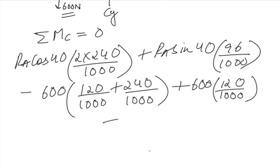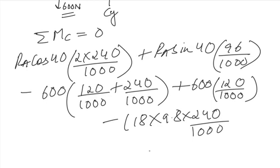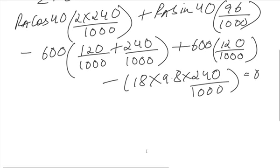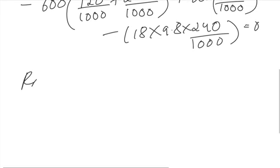Minus the weight acting downwards, 18 into 9.8 into 240 upon 1000. The perpendicular distance is 240. Is equal to 0. On equating it with 0, RA comes out to be 433.945 Newton.